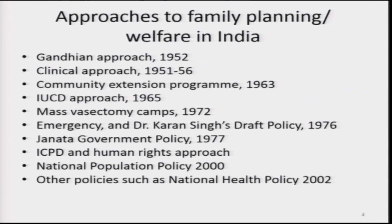Then came the IUCD approach in 1965, mass vasectomy camps in 1972 — to which I referred in a previous lecture — by Dr. Krishna Kumar, an IAS officer in Ernakulam district of Kerala. Then was the period of Emergency, which is very significant, and the first population policy draft was issued by Dr. Karan Singh in 1976. The Janata government policy came in 1977, the National Population Policy in 2000, then in 2002 the National Health Policy was announced, which had many points common with the National Population Policy of 2000. Nowadays we are under the influence of Millennium Development Goals, Sustainable Development Goals, and a reproductive health and human rights approach.